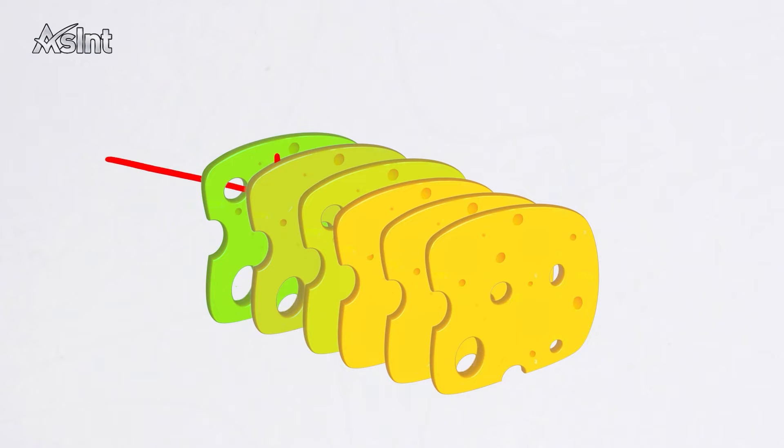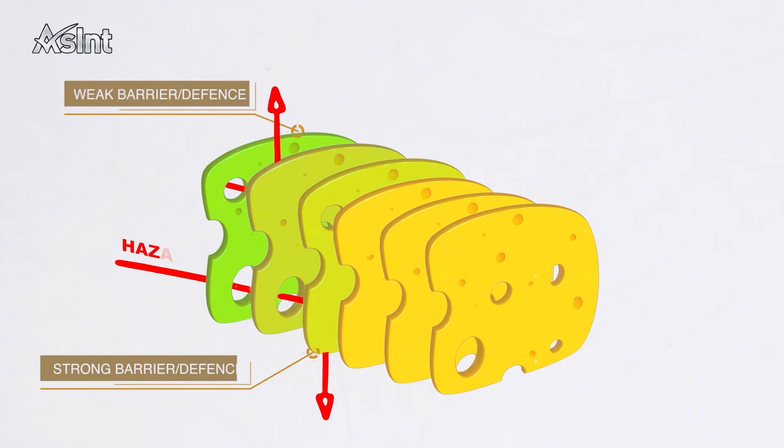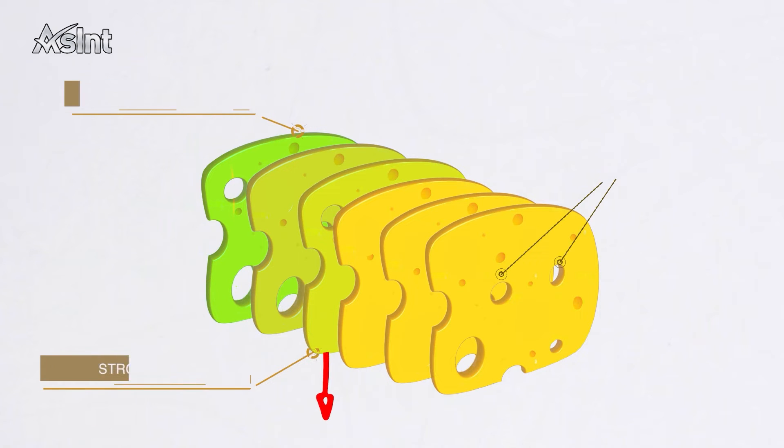In the Swiss cheese model, the process's defenses against hazards are modeled as a series of barriers, represented as slices of cheese. The holes in the cheese slices represent weaknesses in individual parts of the system.